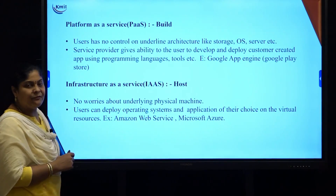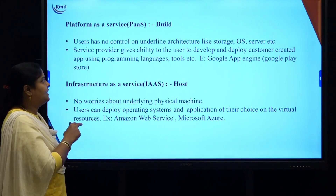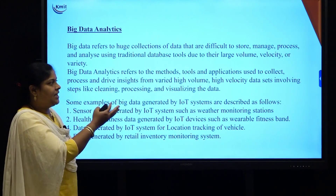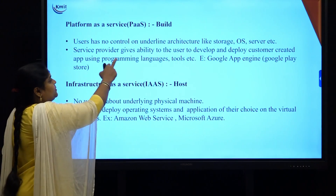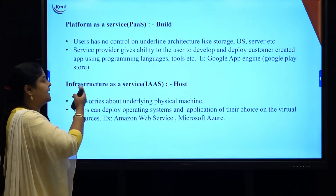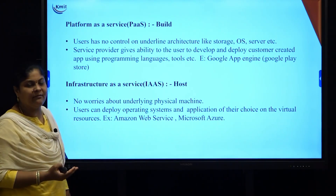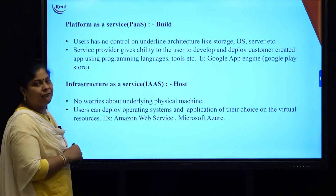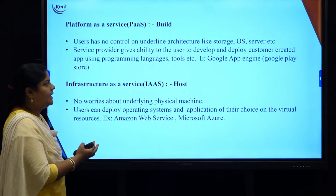The next type of service is platform as a service, also called PaaS. In this service, the user does not have control over the underlying architectures like storage, network, and operating system. The service provider gives users the ability to develop and deploy customer-created apps using programming languages or tools. For example, if you want to develop an Android application, you can develop it and deploy it onto a platform like the Google Play Store. Basically, PaaS provides us a platform.